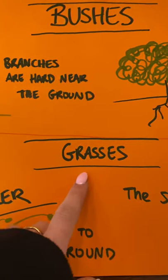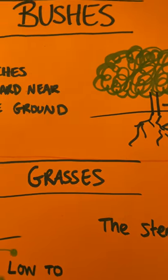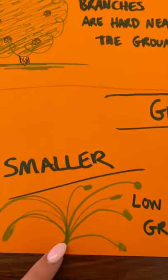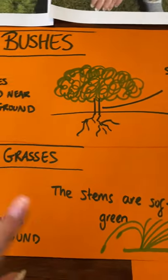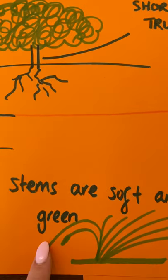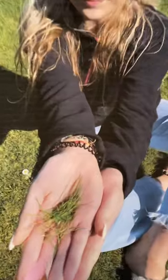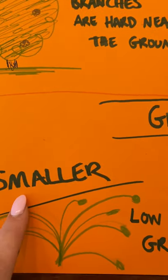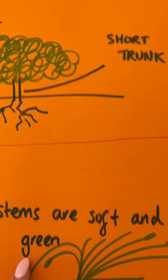Now let's move on to grasses. G-R-A-S-S-E-S. Now these are a lot smaller than trees and bushes. They are on the ground and very, very low to the ground. The stems are soft and green. So grasses don't have a trunk — they have stems that are soft and green, like this. And here is lots of grass in my garden. So grasses are smaller and low to the ground, they have stems, not trunks, and are soft and green.